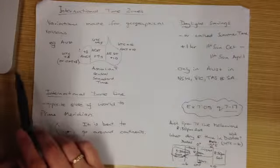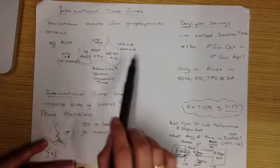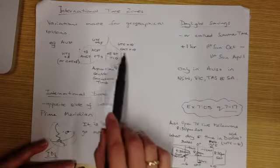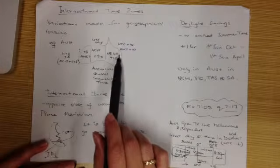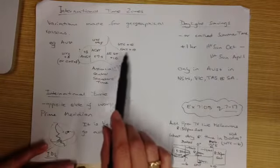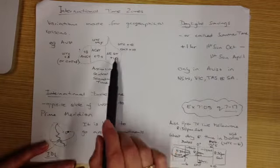But basically for geographical reasons. So if we look at Australia, then we've got our Australian Eastern Standard Time, we've got the states of Queensland, New South Wales, and Victoria working at GMT plus 10 or UTC plus 10.